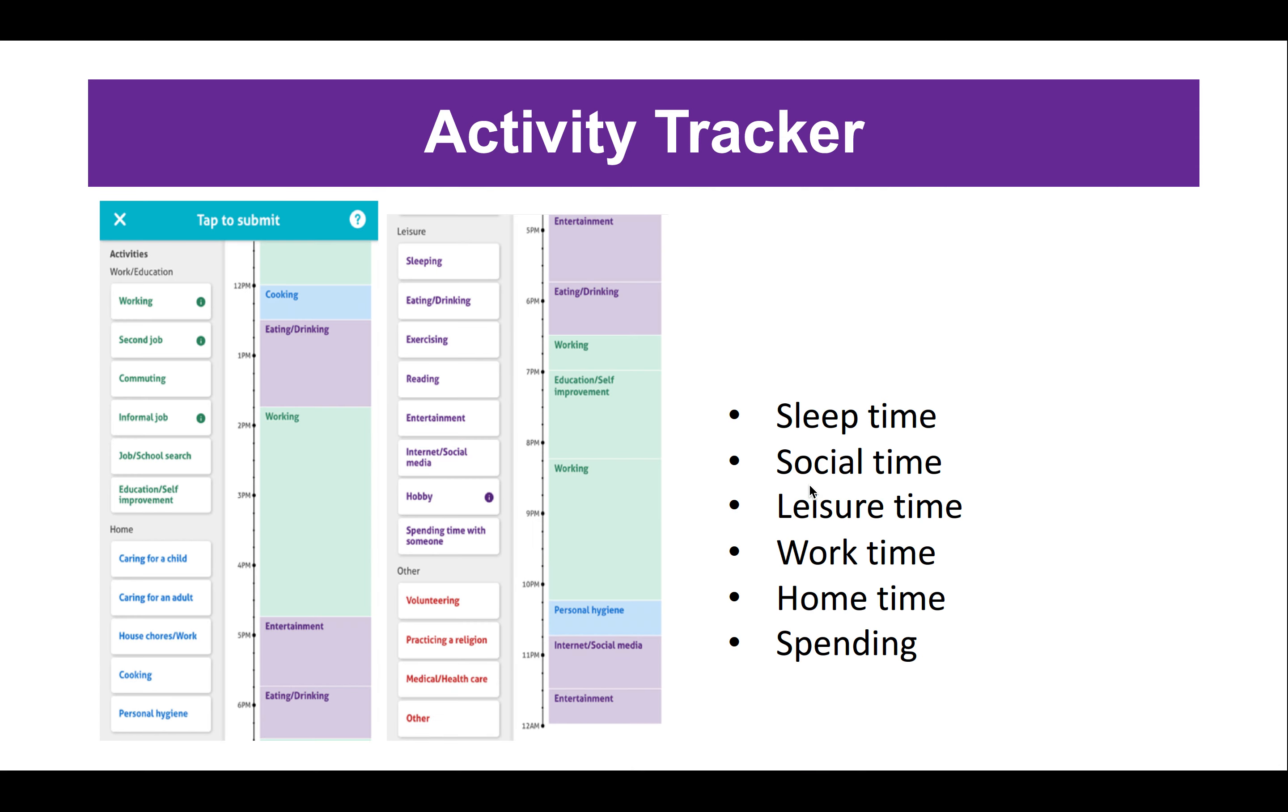We gather the subjects' daily life events in this activity tracker. In this tracker, subjects enter the activities they've done in a 24-hour time frame, like a diary, every week. We categorize their daily life activities into six different events: the duration of their sleep time, the time they spend with other people, their leisure time, the work time, home time, and also the money they spend in a day.